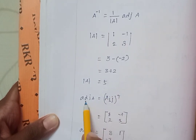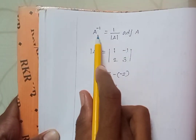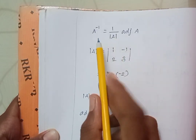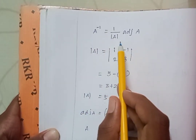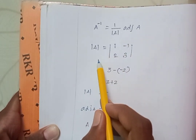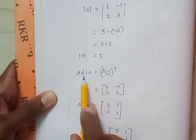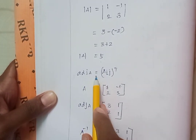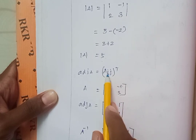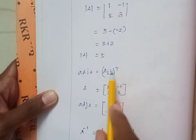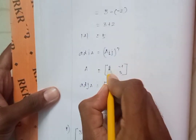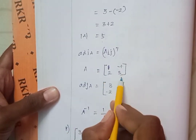Next we want to find the adjoint of A, because the A inverse formula is 1 divided by determinant of A into adjoint of A. To find A inverse we need two things: first, determinant of A, and second, adjoint of A. We have found the determinant of A; now we find the adjoint of A. Adjoint of A is the transpose of the cofactor matrix. So, given A equals 1, minus 1, 2, 3.